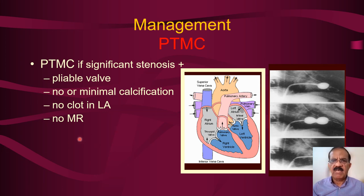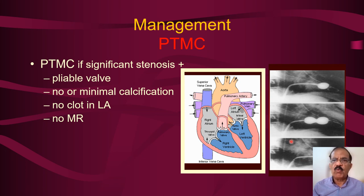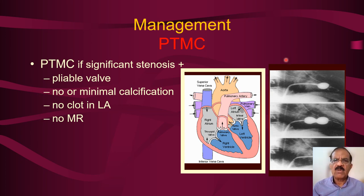This picture shows the catheter going to the right atrium, then to the left atrium, then to the mitral valve where it is inflated. This kink shows the stenosed mitral valve lumen; once inflated, it opens up. You then take out the catheter and the patient's symptoms improve dramatically. It is a catheter-based rather than open surgical procedure and the patient gets a lot of benefit, though it might need to be repeated later. Unfortunately, not every patient is a proper candidate.